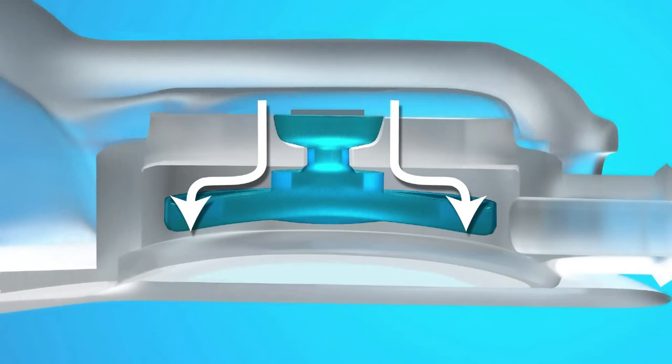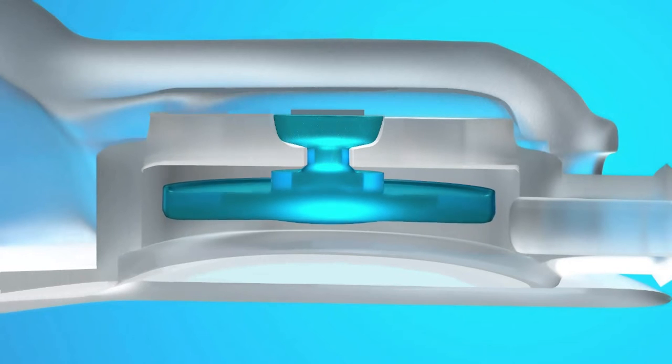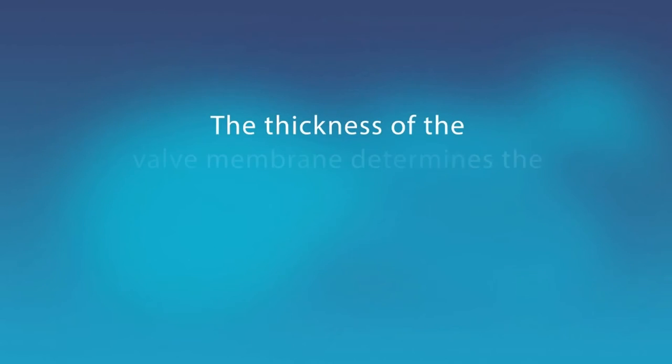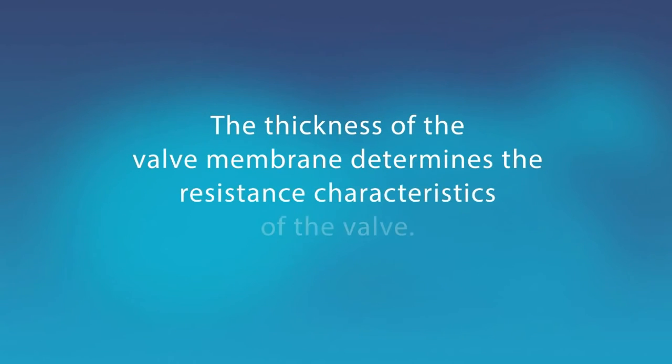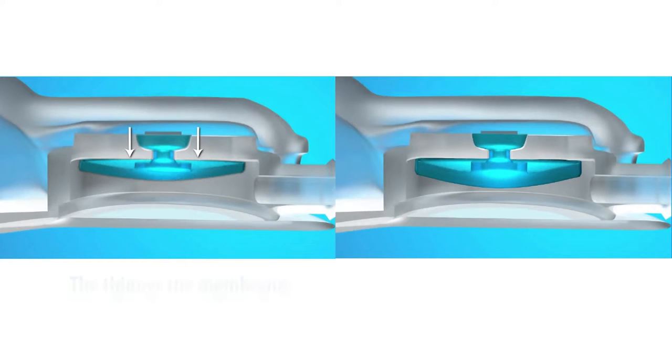When the ICP is lower than the resistance of the silicone umbrella, the mechanism closes. The thickness of the valve membrane determines the resistance characteristics of the valve. The thinner the membrane, the lower the valve resistance. The thicker the membrane, the higher the valve resistance.